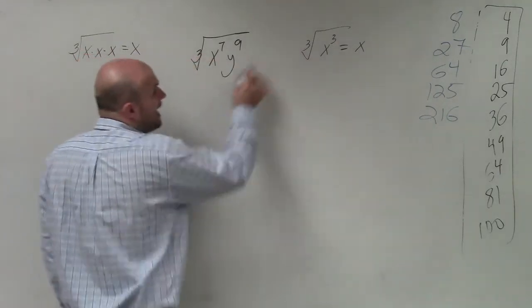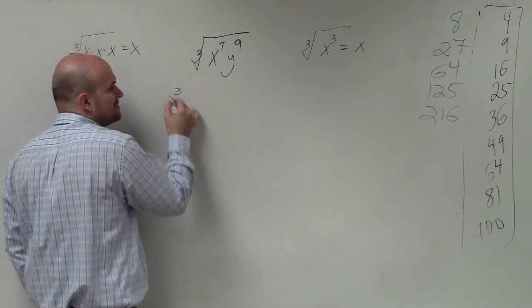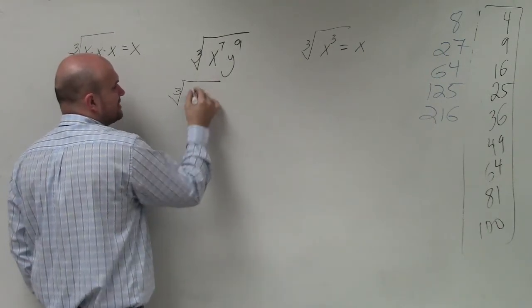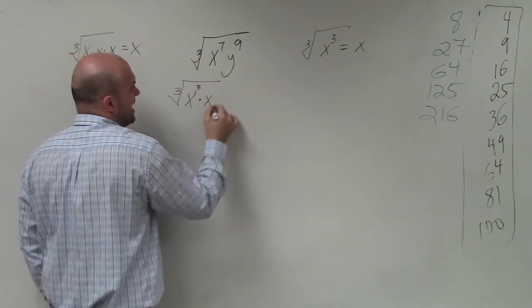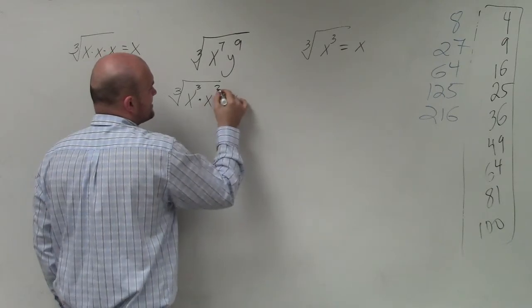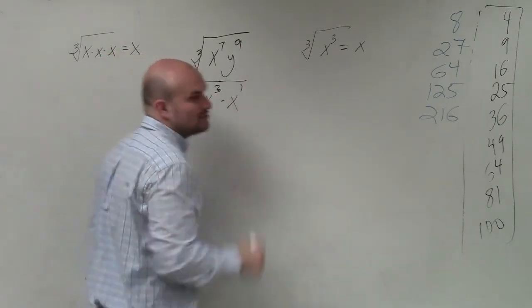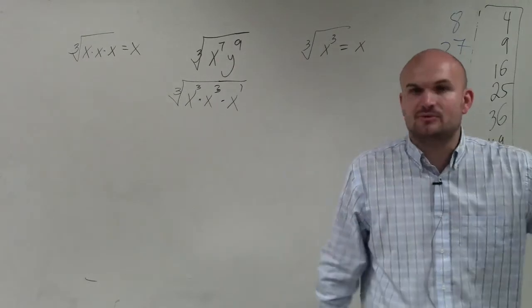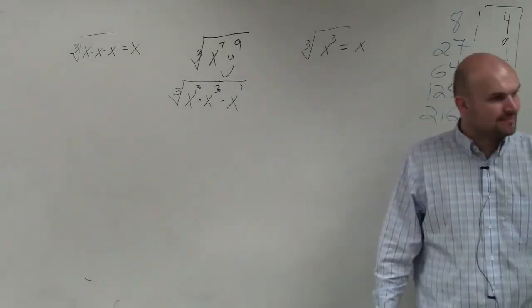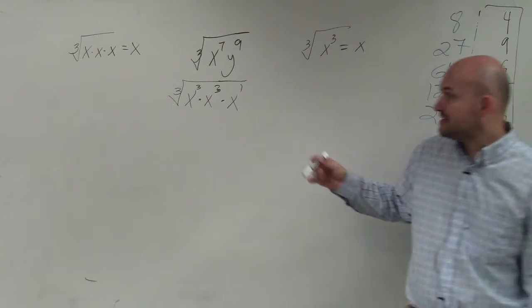I don't like writing them all out unless I really have to. So in here, I just write this as x cubed times x cubed times x. Why did I have to write it that way? Because remember, the rules of exponents state that when you multiply exponents, you add the powers. So 3 plus 3 plus 1 gives you 7.